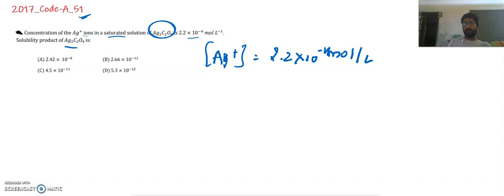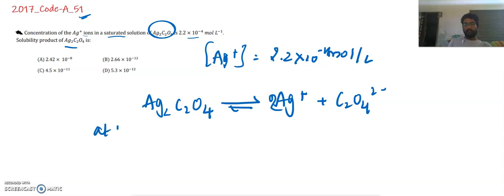We will see what happens when Ag2C2O4 is dissolved. Ag2C2O4 gives 2Ag+ plus C2O4 2 minus. If the concentration of Ag2C2O4 at time t equals 0 is x, this will be 0, and at time t equilibrium: x minus s, 2s and s. I hope this is clear.